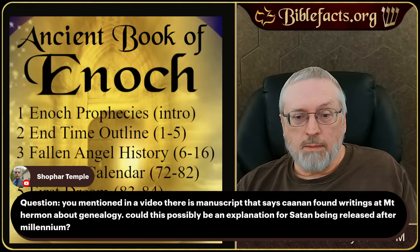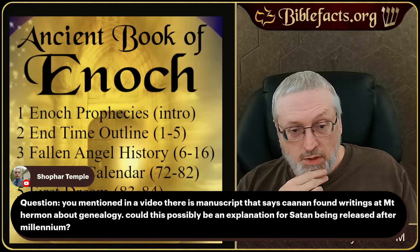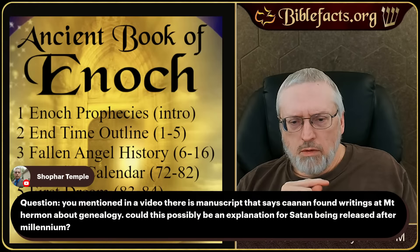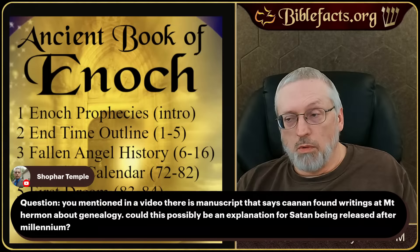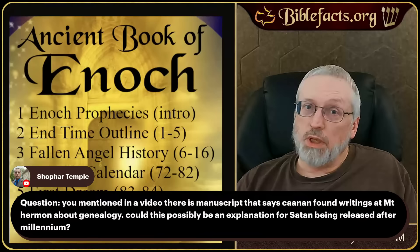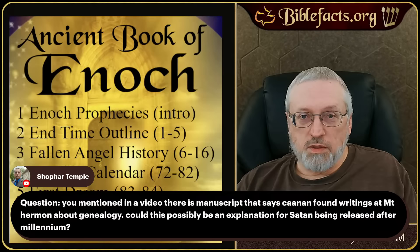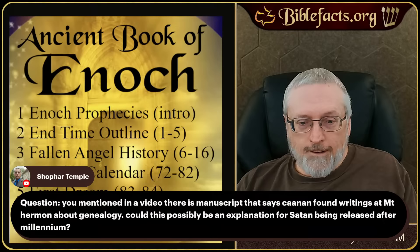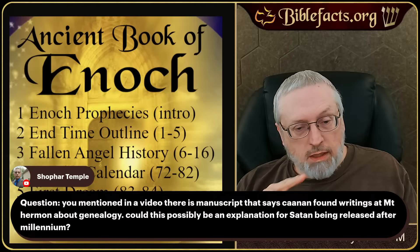Question: you mentioned a manuscript that says Canaan found writings at Mount Hermon about genealogy — could this possibly be an explanation for Satan being released after the millennium? I'm not sure how those would be connected — I'd have to try to figure that out. Right now we're just doing Enoch, and we'll finish Enoch with the calendar and prophecies. Later on we'll have a series on post-flood Nephilim, but we need to know who we're dealing with — who the demons are and what the history was — which is why we're doing Enoch first.